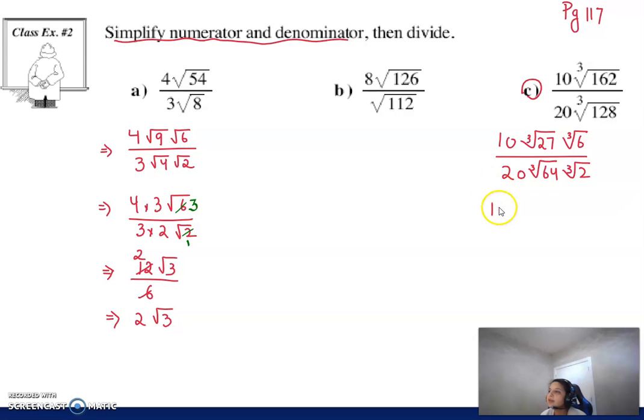And again, if we write that down again, this will give me a 3 cube root 6. And in the denominator, we have 20. And this gives me a 4, and we're left with cube root 2. So once again, you can multiply this out, and this will give you 30 over 80, and then we have cube root 6 over cube root 2.